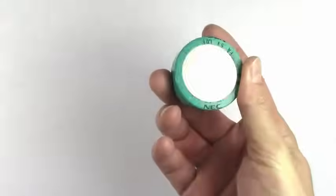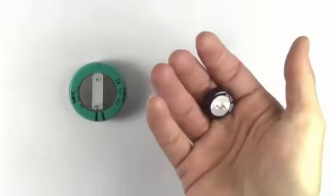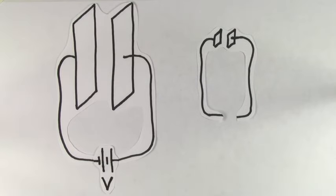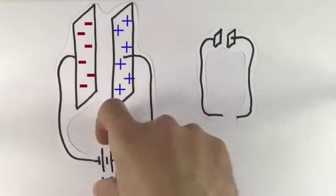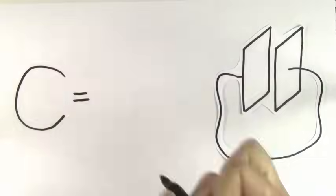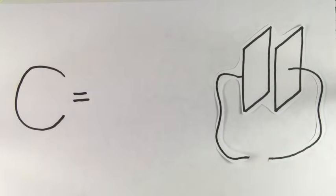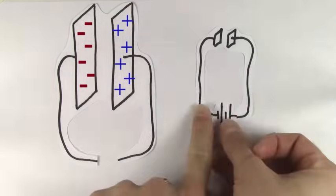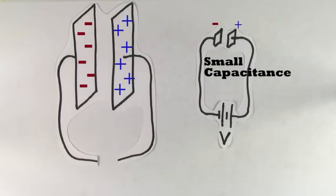So capacitors are devices used to store charge, but not all capacitors will store the same amount of charge. One capacitor hooked up to a battery might store a lot of charge, but another capacitor hooked up to the same battery might only store a little bit of charge. The capacitance of a capacitor is the number that tells you how good that capacitor is at storing charge. A capacitor with a large capacitance will store a lot of charge,